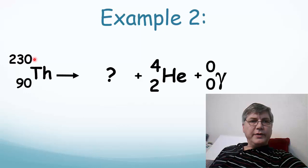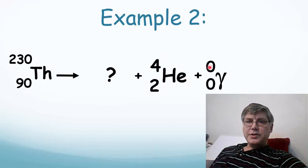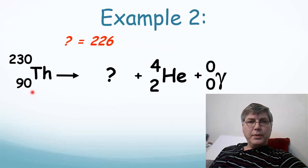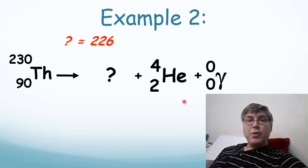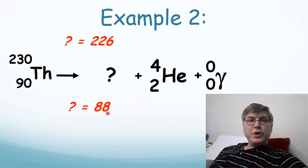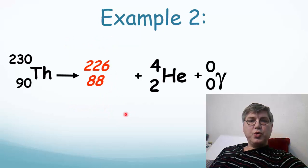How about this one? We have 230 over 90, so this is thorium. And it decays into something plus an alpha particle plus a gamma ray. All we have to do is make sure that the two sides are equal to each other. The left side on top is 230, so 230 is equal to something plus 4 plus 0. So what is the something that goes here? Well, it's 226. What about the bottom? 90 is equal to something plus 2 plus 0. That's 88. So if we take these two numbers and we put them where the question mark is, 226 over 88, we should be able to figure out which element goes here. All we need to do is look on our periodic table and find out what has the atomic number of 88. That's radium.